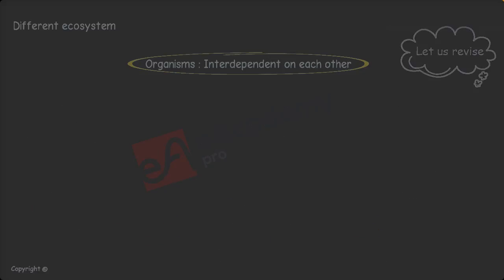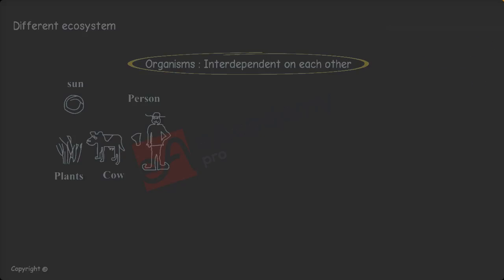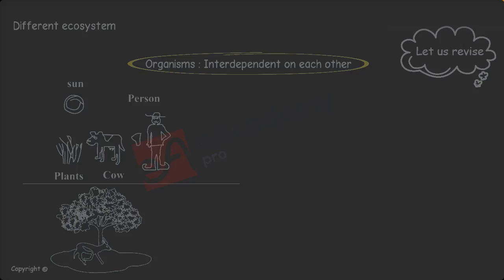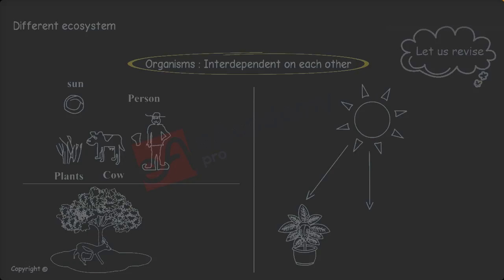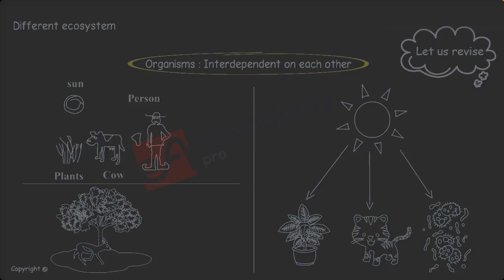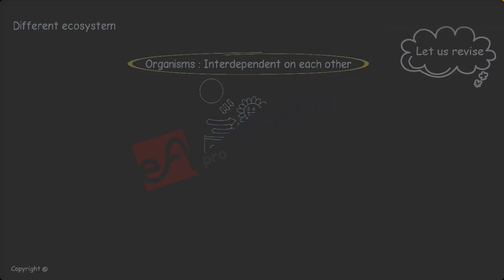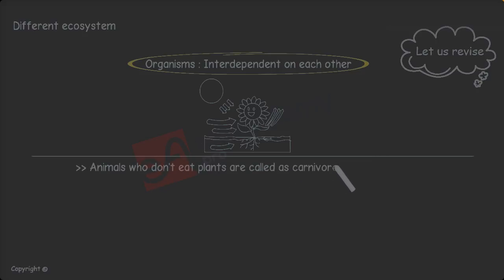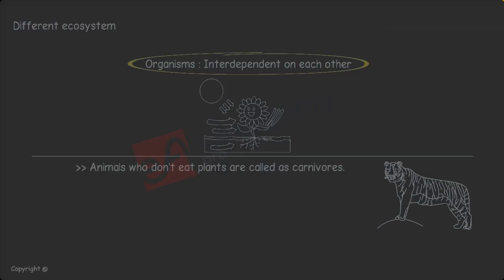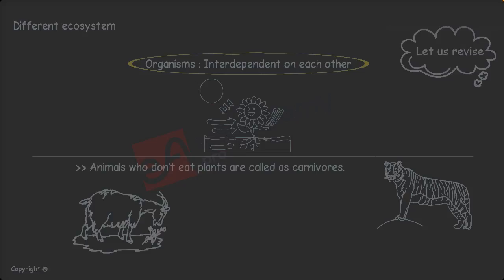Let us revise. 1. The term interdependence means depending on each other. 2. Animals depend on plants for food and shelter. 3. Sun is the main source of energy for all the organisms. 4. Even CO2 plays a very important role in food preparation for plants. 5. Animals who don't eat plants are called as carnivores. 6. Animals who depend on plants are called as herbivores.